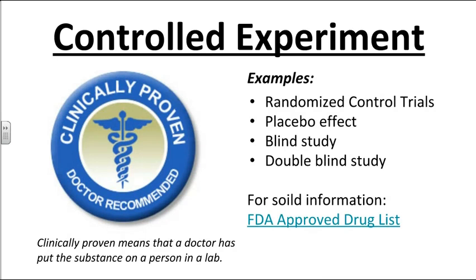Controlled experiments are especially helpful in research around supplements and drugs. We generally do randomized control trials where people are randomly assigned to either the experimental group, receiving the drug, or the control group, receiving a placebo. In biology and health research, the goal is to beat the placebo effect — if you give someone a sugar pill and tell them it will fix them, about 30% of the time it will, simply because the brain believes it will help.